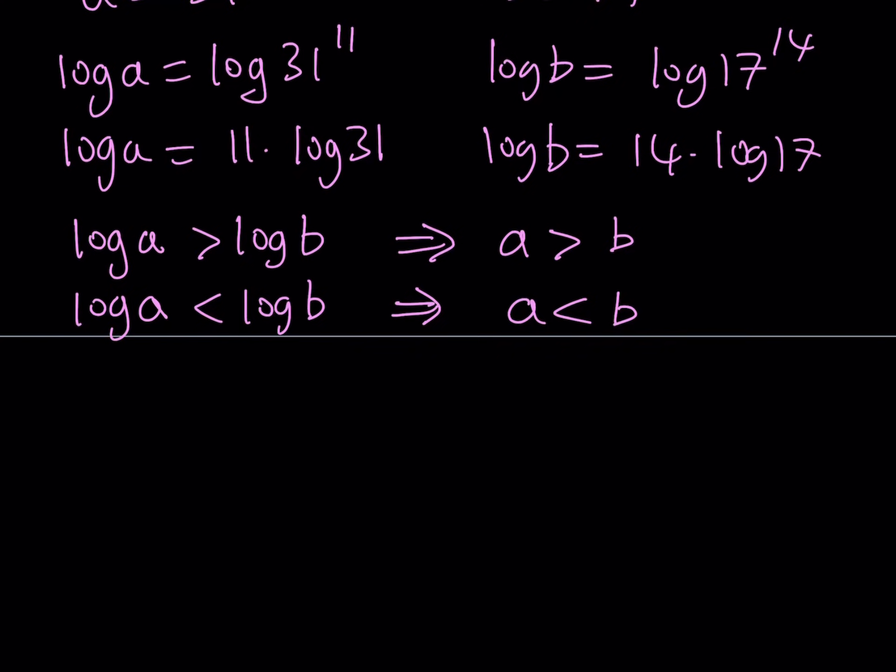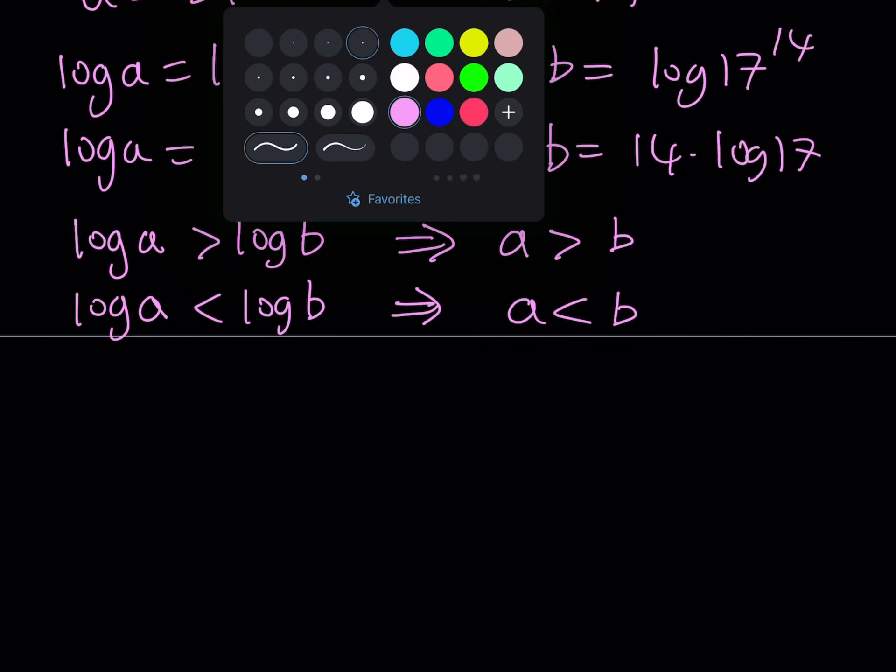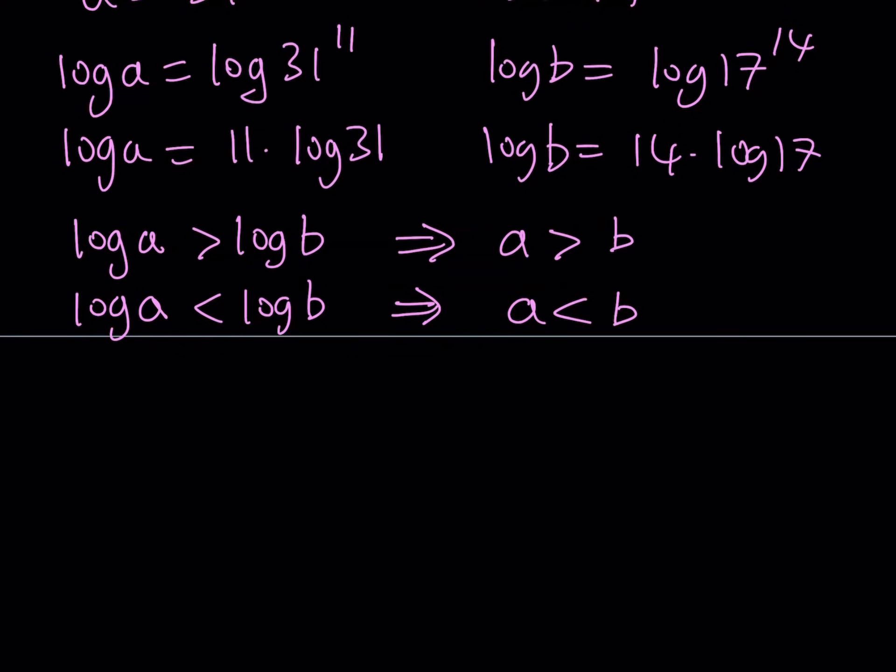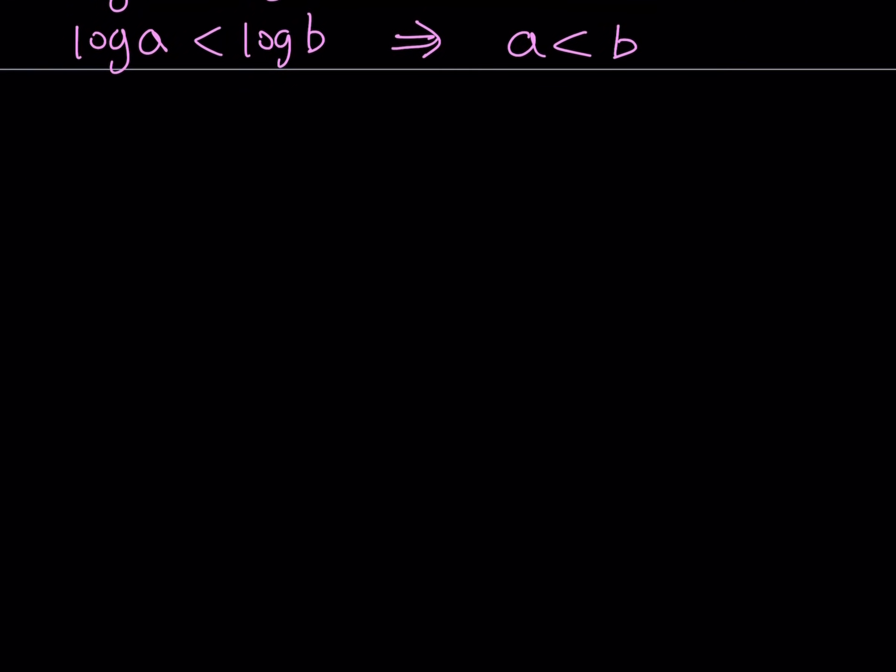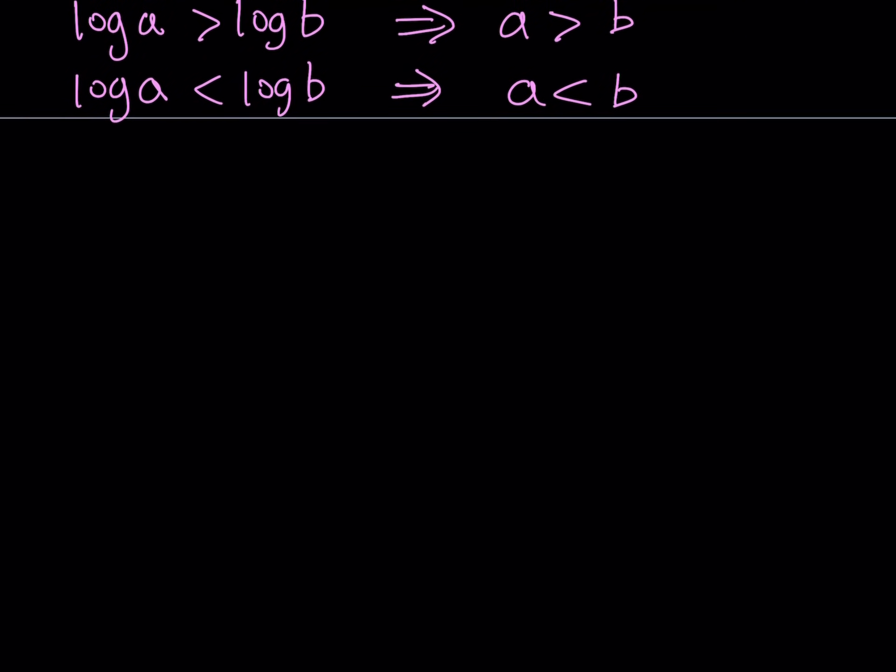Another way to look at this problem is using powers. Of course, we're dealing with powers here, right? So notice that 34 is 2 times 17. And what does that have to do with 31? Well, obviously 31 is less than 34. And when you raise both sides to the 11th power, this is going to be true as well. Because X to the 11th power is going to be an increasing function for positive basis.